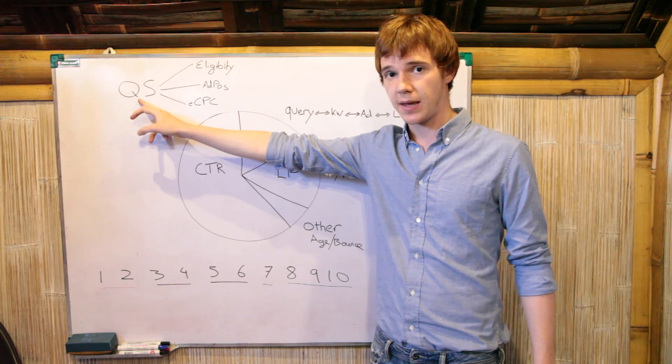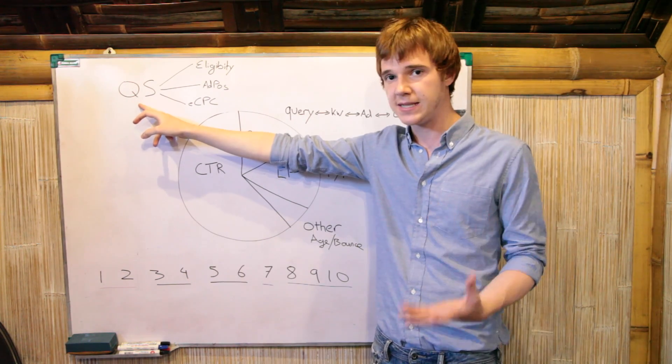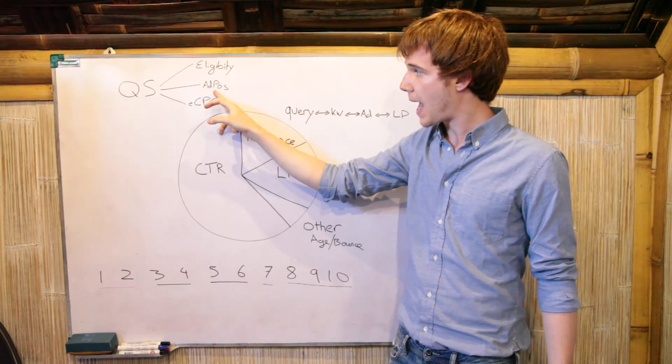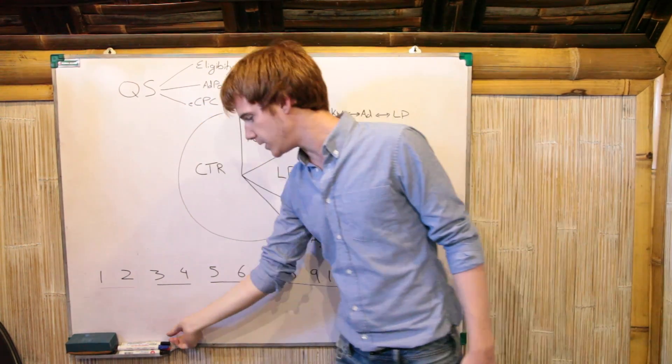So to impact quality score, like we've seen, and we've seen how powerful quality score is, like we've seen how make or break that is, to impact eligibility, ad position, and how much you pay per click, really you're looking at click-through rate.